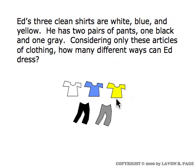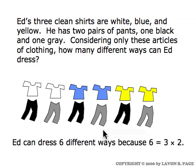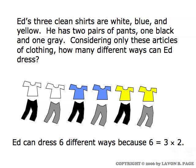There are three choices for the shirt he wears and two choices for which pair of pants he wears. We can picture the six ways that he can dress: white shirt black pants, white shirt gray pants, blue shirt black pants, blue shirt gray pants, yellow shirt black pants, or yellow shirt gray pants. Six possible ways he can dress, because there are three possibilities for which shirt he wears, two choices for which pair of pants, and three times two is six.